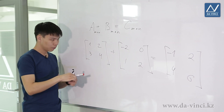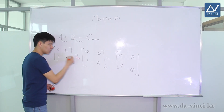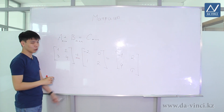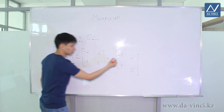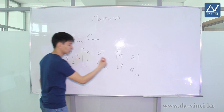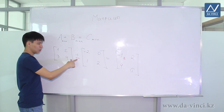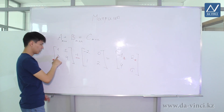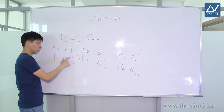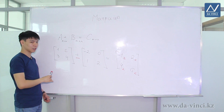Subtraction of matrices occurs similarly. If we want to subtract matrices instead of adding them, we simply subtract the elements of the second matrix from the elements of the first matrix: 1 minus minus 2 equals 3; 2 minus 0 equals 2; 3 minus 1 equals 2; 4 minus 2 equals 2. Addition and subtraction of matrices both occur element by element.